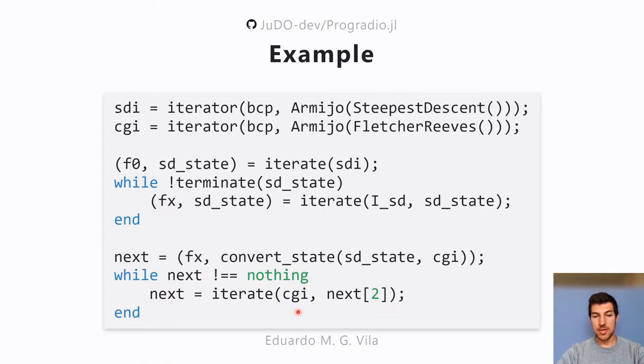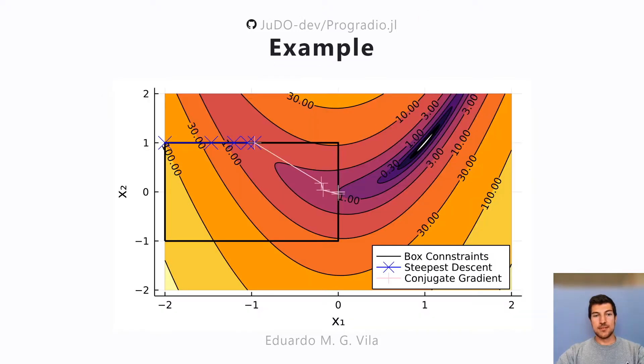The example here is for the Rosenbrock function, which is a classic non-linear optimization benchmark problem. I've added some box constraints here in black, and starting on the top left corner with the steepest descent iterator, it progresses until a certain condition is met on the rate of convergence, and then it switches to a conjugate gradient method until it finds the minimizer.